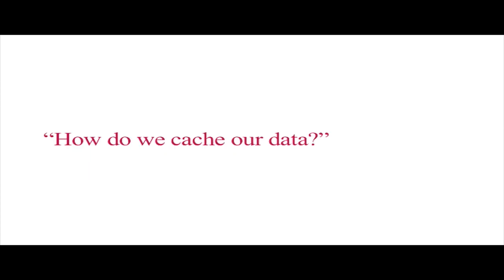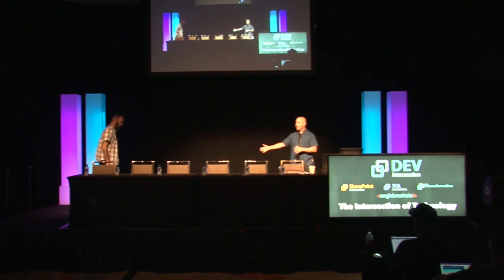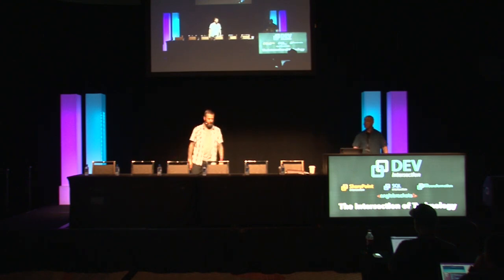Once we get our data, wouldn't it be nice if we're not hitting the server for data that we could cache? For example, a list of all the US states - would you want to hit the database every time for that? Some data we want to cache, some we don't. Maybe inventory we don't want to cache because it's very volatile. A list of states we might want to cache. So we have to pick and choose.